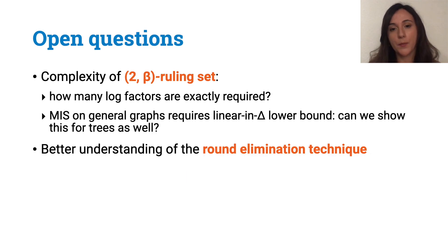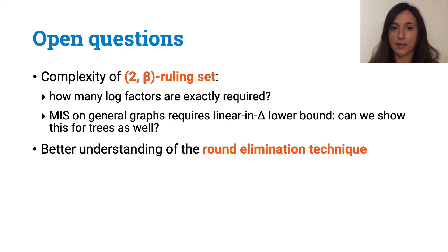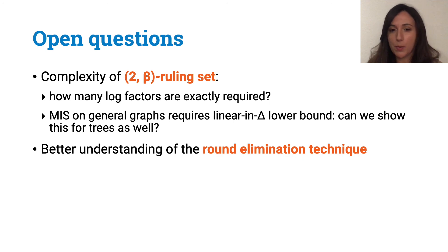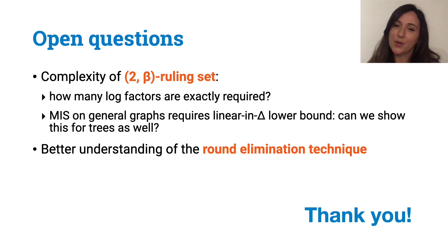Let me conclude with some open questions. Now we know that the complexity of the ruling set problem lies in the polylog n region, but we still don't know how many log factors are needed. One open question is to understand the exact complexity of ruling sets. Another interesting question regards the complexity expressed as a function of delta. We know that MIS on line graphs requires linear in delta rounds, and we believe this should be true also for MIS on trees. Finally, all these open questions, and probably many other mainstream open questions in the field, are strongly related to our understanding of the round elimination technique. Many thanks for watching, I hope you enjoyed it!